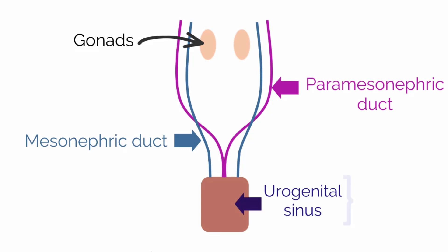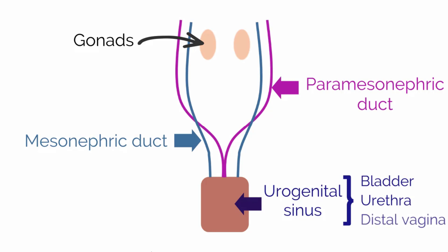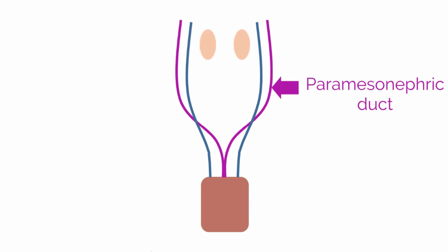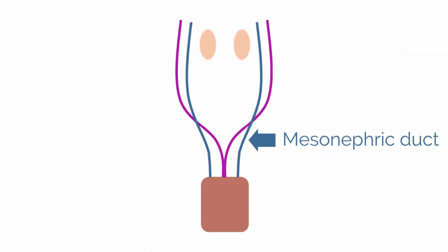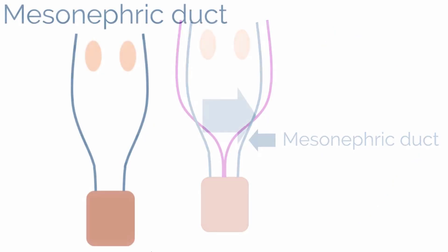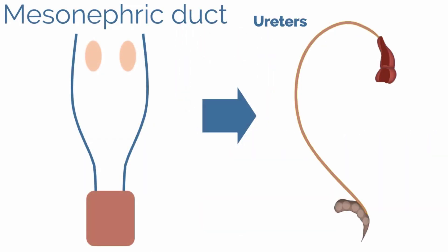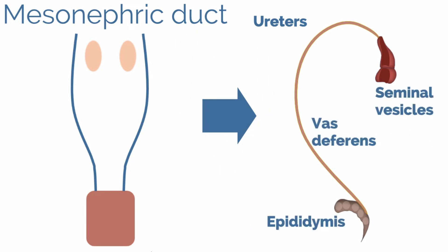The ducts contact the urogenital sinus, which gives rise to the bladder, urethra, and distal vagina. The paramesonephric or Müllerian ducts give rise to the fallopian tubes, uterus, and the upper two-thirds of the vagina. The mesonephric or Wolffian ducts give rise to structures not demonstrated in this image, as well as the male genital ducts, including the epididymis, vas deferens, and seminal vesicles.